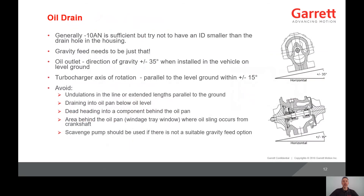For an oil drain, generally a dash 10 AN is sufficient. Try not to have an ID smaller than the drain hole in the housing. To ensure that the oil drains out of the center housing via gravity, the oil outlet flange when installed on the vehicle on level ground should be plus or minus 35 degrees. And as far as the axis of rotation, which is the tilt, you should make sure that this is parallel to the ground within plus or minus 15 degrees.